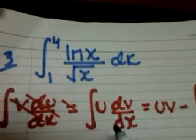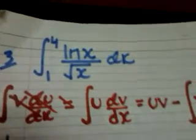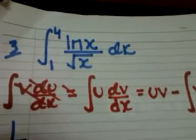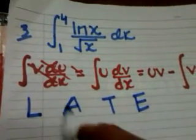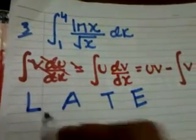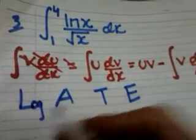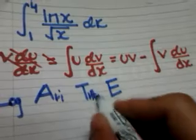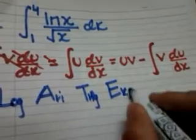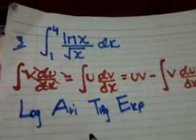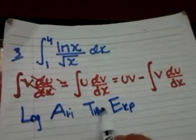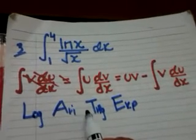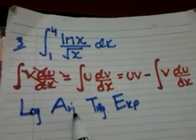So which should we consider u and which should we consider dv by dx? Here's a good way of remembering: LATE. L is logarithm, A is arithmetic, T is trigonometric, E is exponential. If you get any two functions, they should be placed in this order.